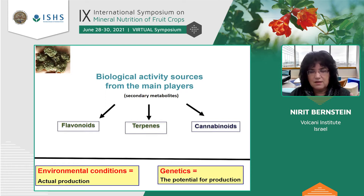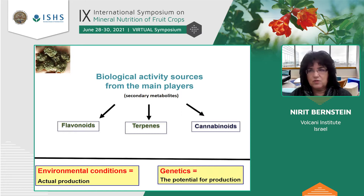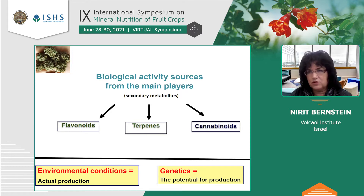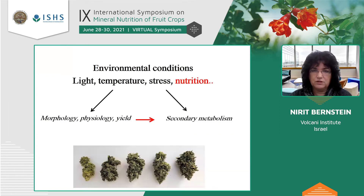All this array of medical compounds and secondary metabolites are affected by two main factors. One of them is genetics — the strain — which is the potential for production, and different strains and cultivars have a very diverse secondary metabolite profile. The other one, which we'll be focusing on today, is environmental conditions, because the actual production and fulfilling of that potential comes from being largely affected by environmental conditions.